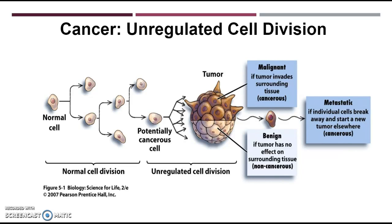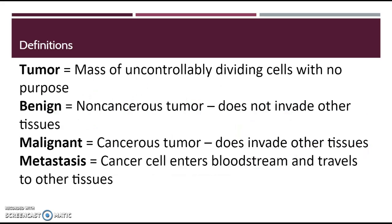Something that's benign is a non-cancerous tumor — it's not going to invade other tissues and it's not really going to hurt you too much. But a malignant tumor is a cancerous tumor, and it does invade other tissues. And metastasis is when a cancer cell enters the bloodstream and travels to other tissues. This is the true danger with a lot of cancers, as it can spread very rapidly throughout the body.